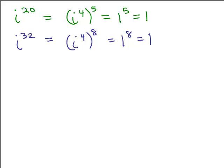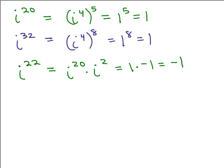If the exponent is a multiple of 4, the answer will always be 1. Now, what if you had something like i to the 22nd? 4 doesn't go into 22 evenly, but it goes into 20. So I can write that as i to the 20th times i squared. i to the 20th is 1 — a multiple of 4 — so this is 1 times i squared. And i squared is negative 1, so i to the 22nd is negative 1.